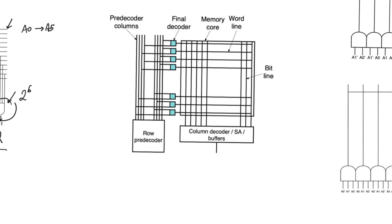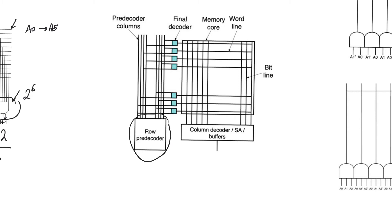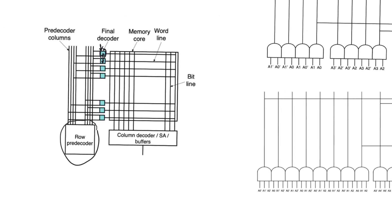We used the pre-decoder/final-decoder architecture for column decoders, but there it was just a nice option. For row decoders, it's actually a necessity — we cannot implement row decoders without this architecture. The pre-decoder produces a number of lines that run vertically, and then there's a small final decoder at the output. The main reason is pitch and area density: this allows very small gates at the outputs, more in line with the size of memory cells. It's particularly important for memories with small cells like DRAM or flash.